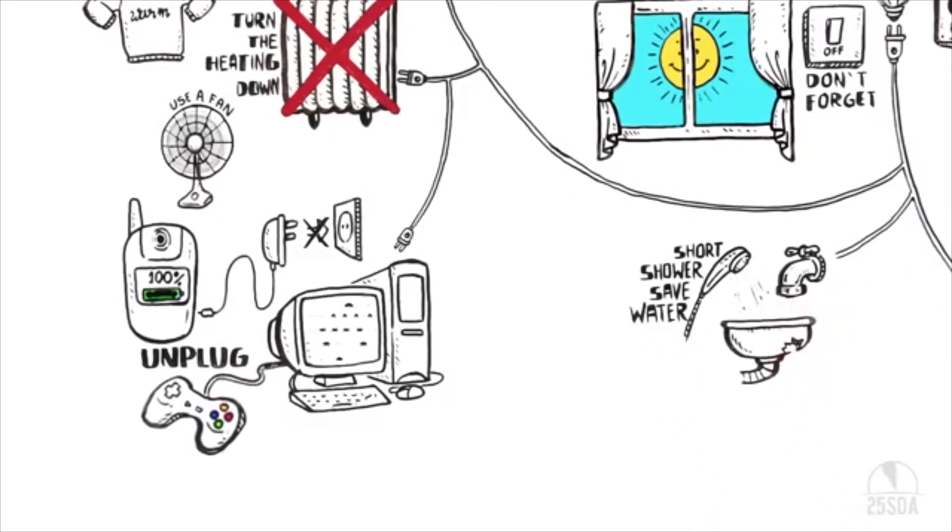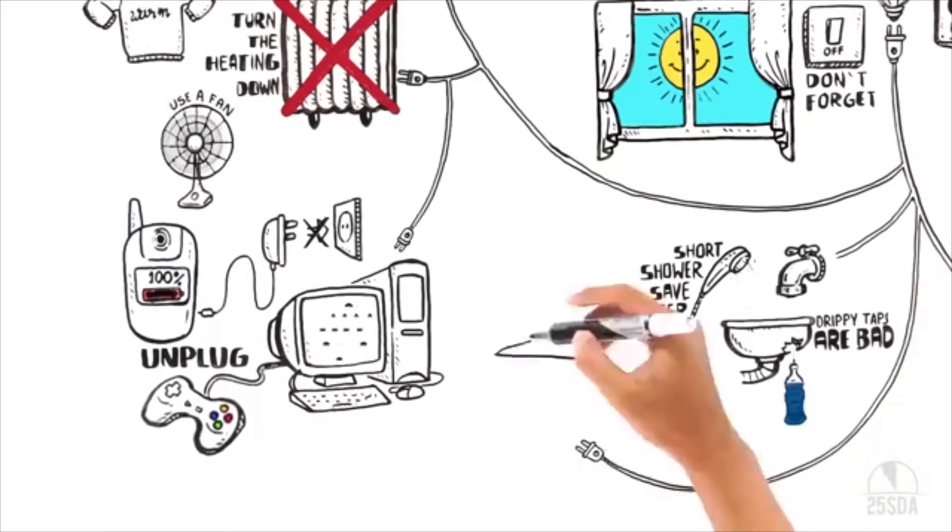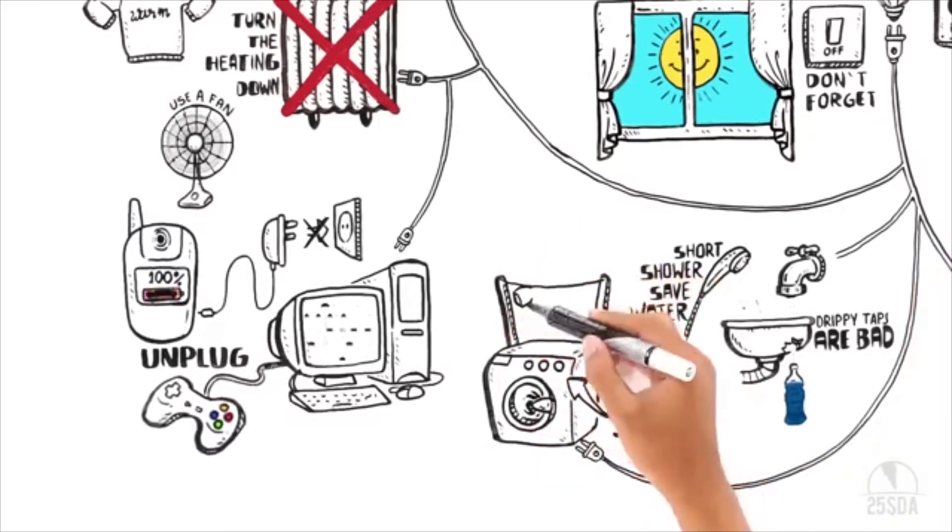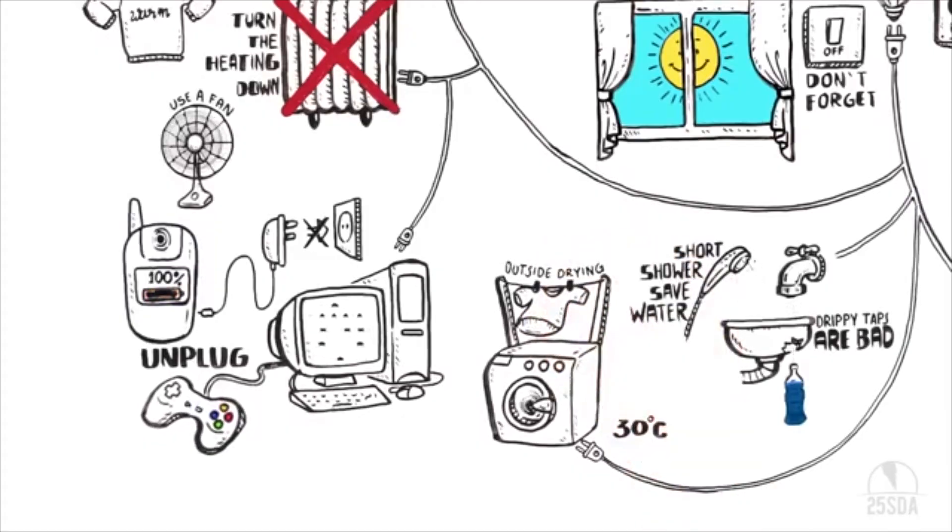Drippy taps waste a lot of water. Just think: a leaking tap wastes enough water to fill a soda bottle every 30 minutes. Set your washing machine to wash at 30 degrees Celsius. Dry your clothes outside instead of using a tumble dryer.